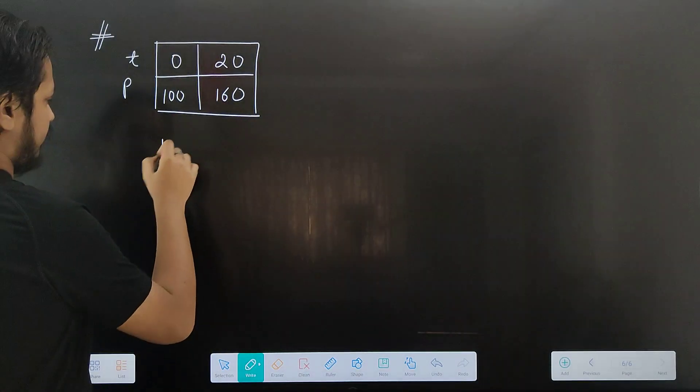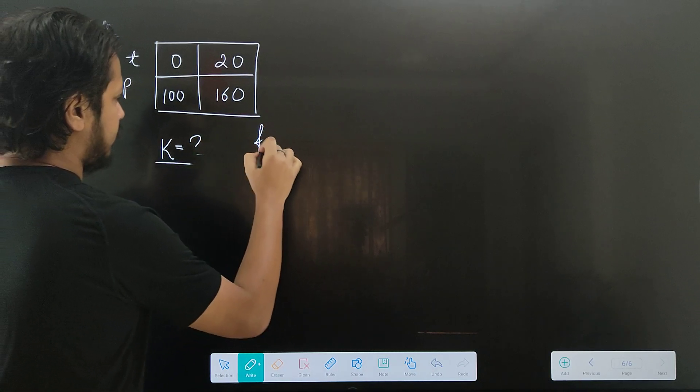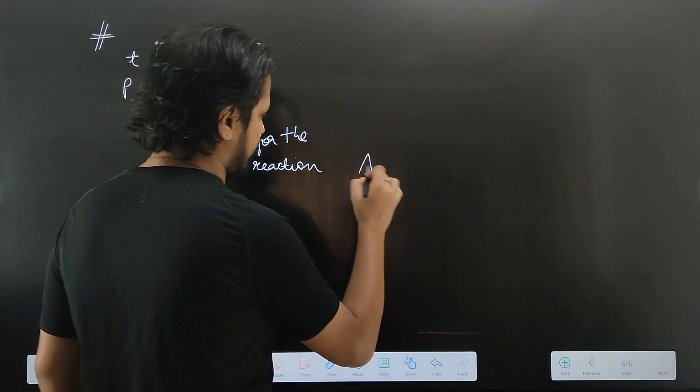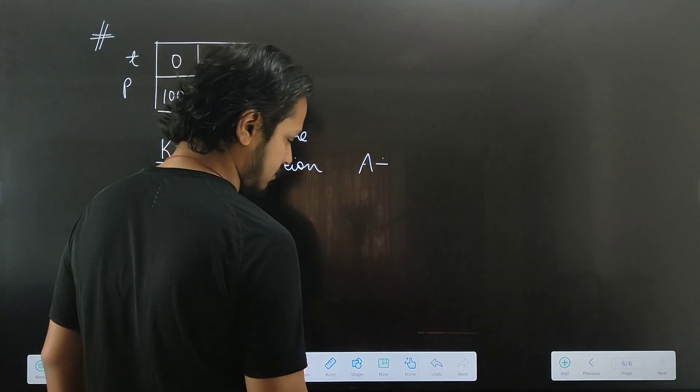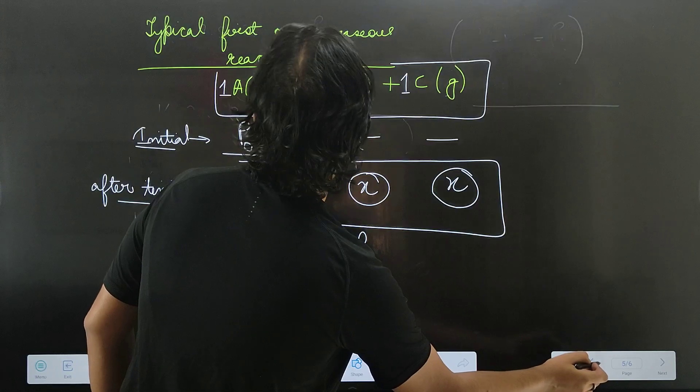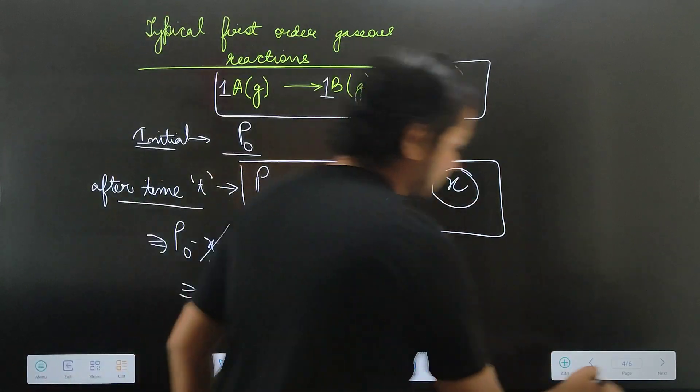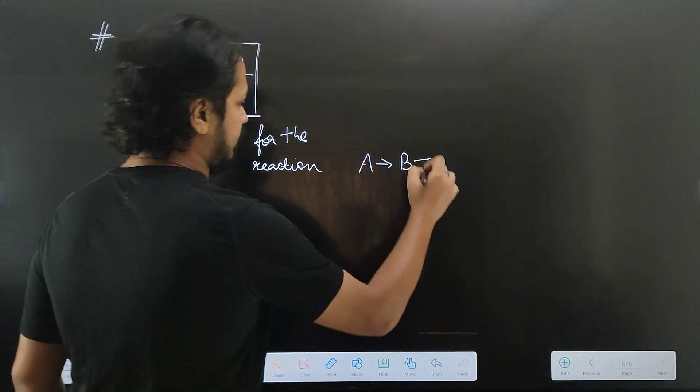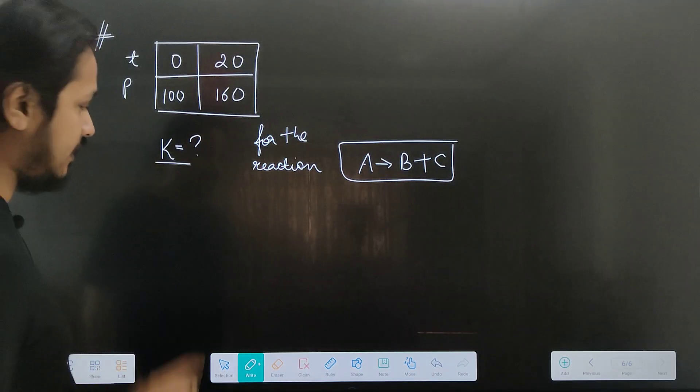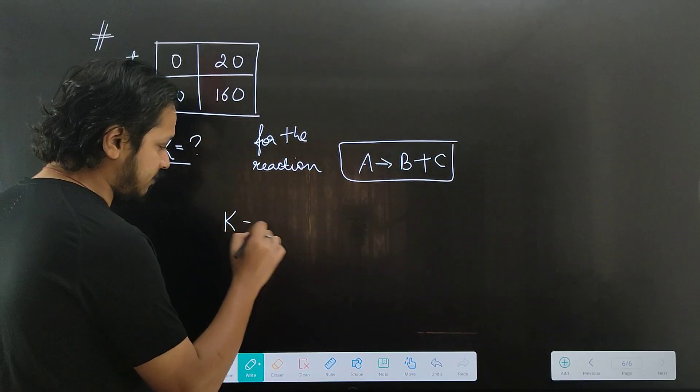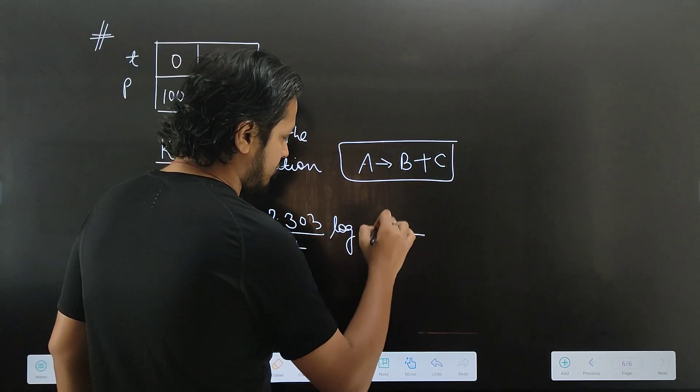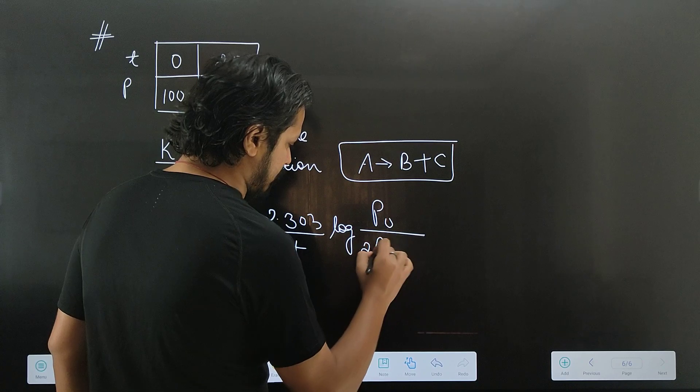For the reaction A gives B plus C, I will derive the final expression: K equals 2.303 by t log of P0 by 2P0 minus Pt. In the expression, P0 is 100, time t is 20 seconds, total pressure is 160.